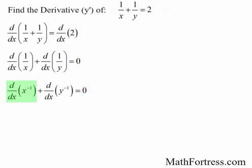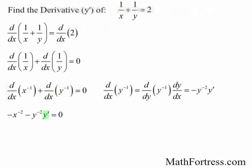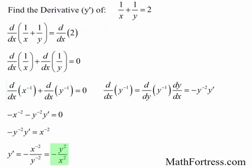The derivative of x raised to the power of negative 1 is just an application of the power rule: negative x raised to the power of negative 2. Now, the derivative of y raised to the power of negative 1 requires the application of the chain rule, because y is a function of x. Applying the chain rule, we have negative y raised to the power of negative 2 times y prime. Substituting all those values and solving for y prime, the final derivative is going to be equal to y squared over x squared.